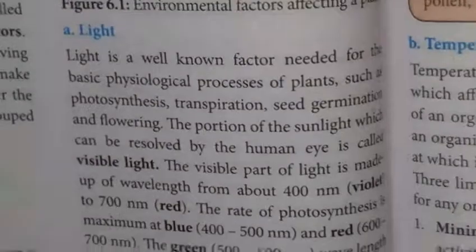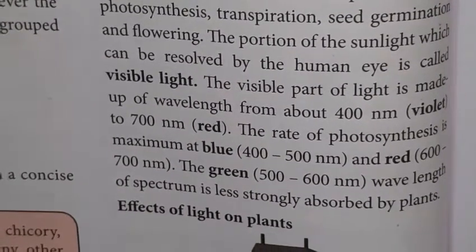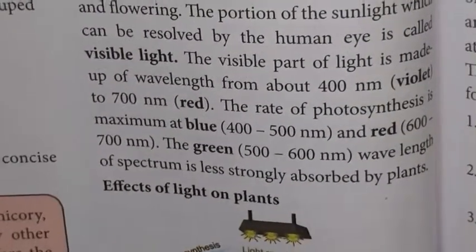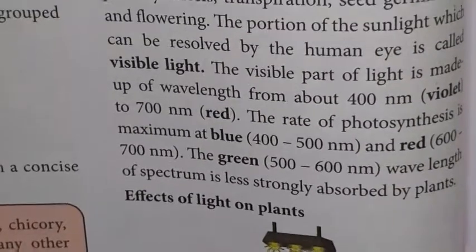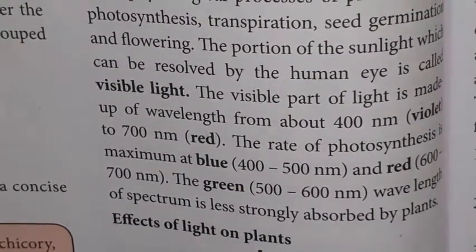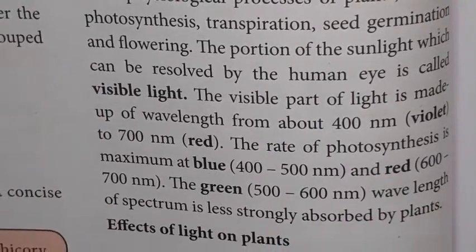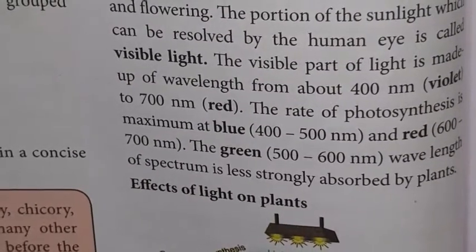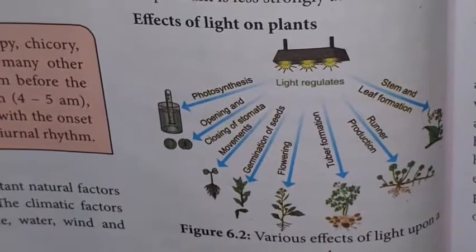The portion of sunlight that can be perceived by the human eye is called visible light. The visible part of light has wavelengths from about 400 nanometers (violet) to 700 nanometers (red). The rate of photosynthesis is maximum at blue light (400–500 nm) and red light (600–700 nm). Green light (500–600 nm) is less strongly absorbed by plants, so the rate of photosynthesis is lower in green light.